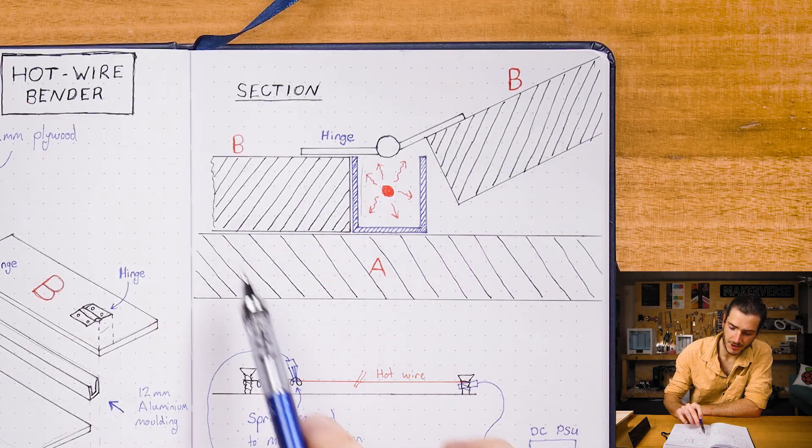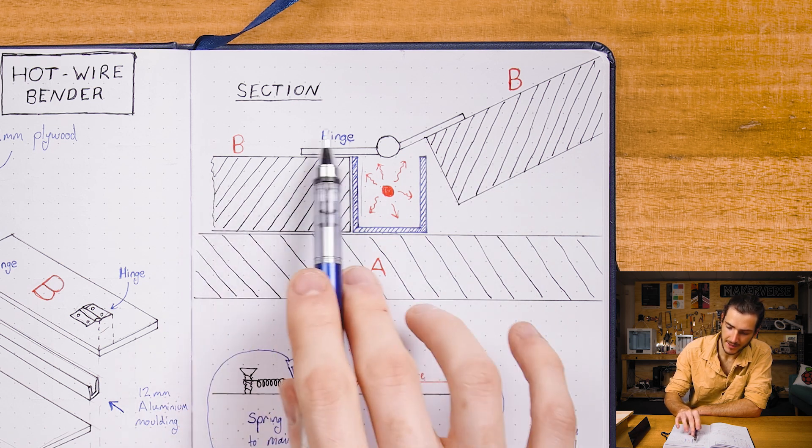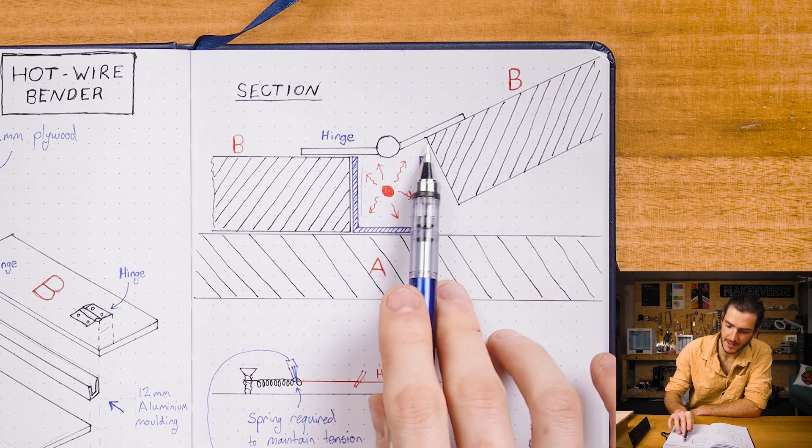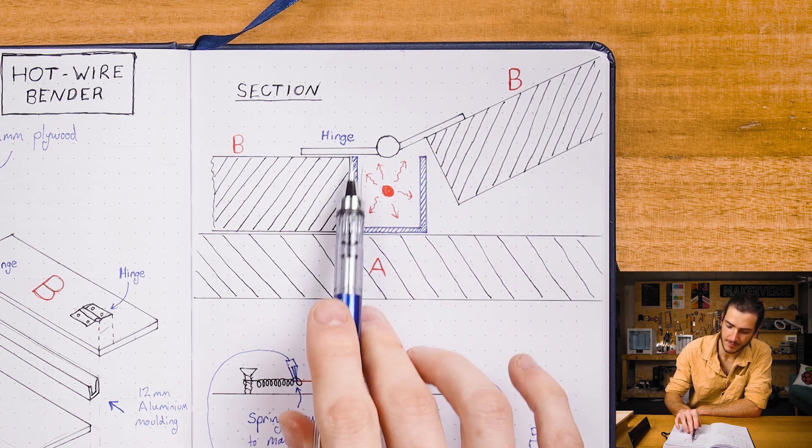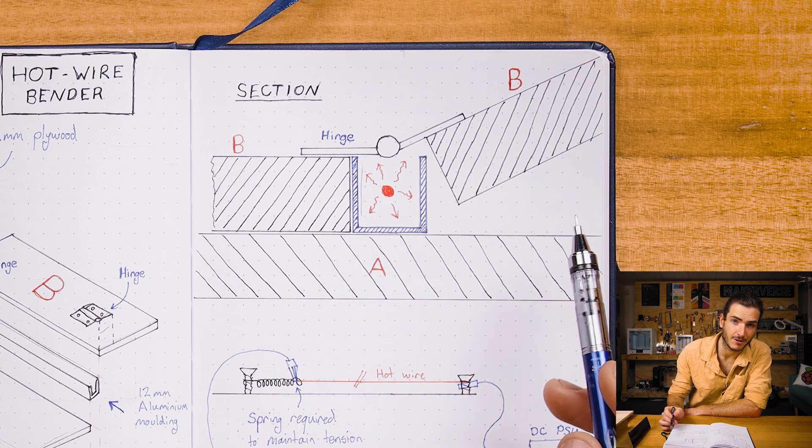Referring to this section drawing, you can see the main large A plate with the fixed B plate, the hinge and the hinging B plate. In blue is the aluminum channel and right in the middle in red is the hot nichrome wire.